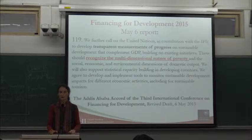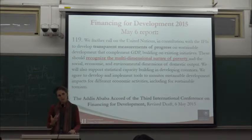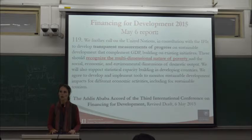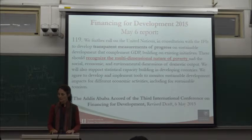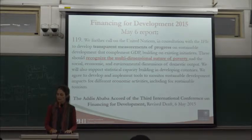The next step was in Addis Ababa, where a high-level meeting on financing for development shaped where resources would go, including for measurement of the SDGs. They called upon the UN to have transparent measures of progress and explicitly requested those measures recognize the multidimensional nature of poverty.